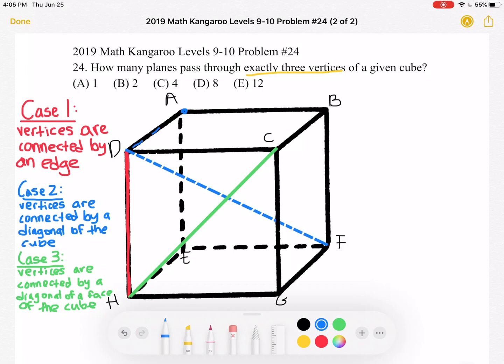Well we can see that if we choose vertex a the plane going through d, a and f also passes through vertex g.